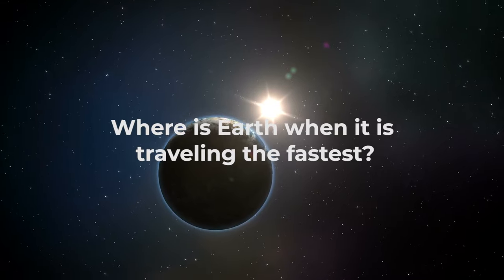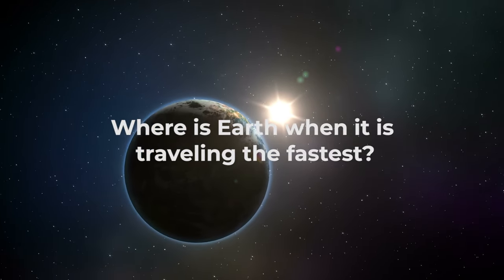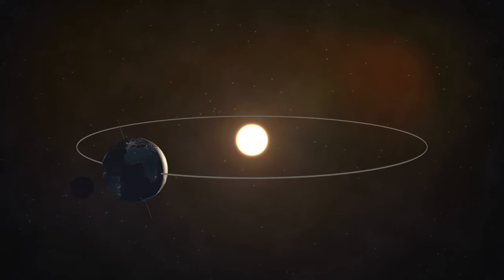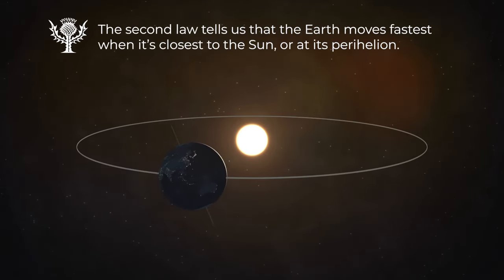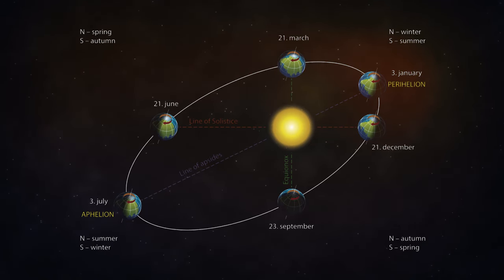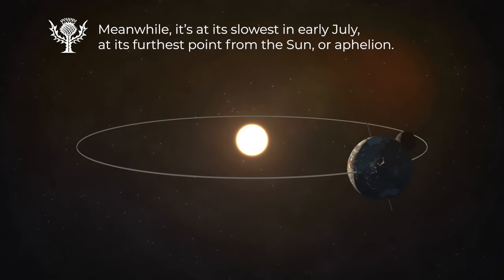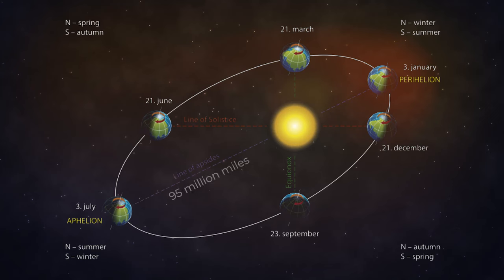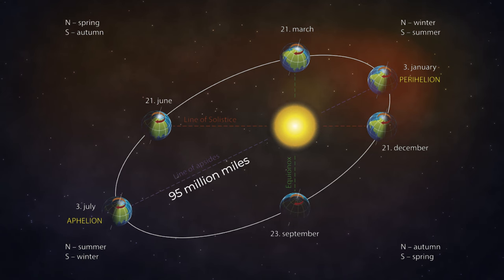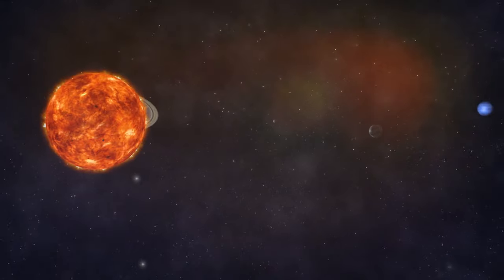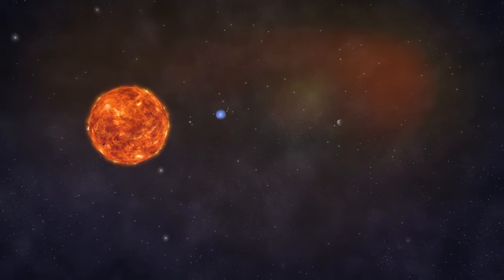Kepler's second law deals with the speed of planets orbiting the Sun. Does it tell us at what point the Earth is moving at top speed? The second law tells us that the Earth moves fastest when it's closest to the Sun, or at its perihelion. That happens in early January, when Earth is about 92 million miles from the Sun. Meanwhile, it's at its slowest in early July, at its furthest point from the Sun, or aphelion. That greatest distance is about 95 million miles. That difference of 3 million miles might sound like a lot, but Earth's orbit is so vast that it's actually nearly circular.